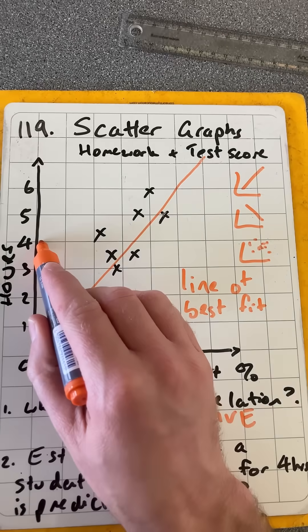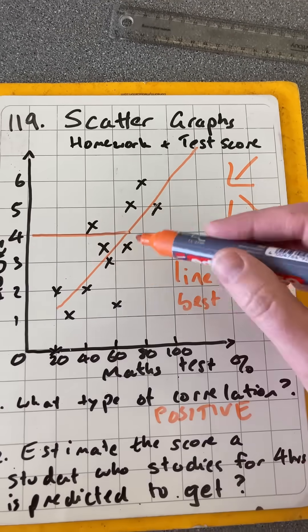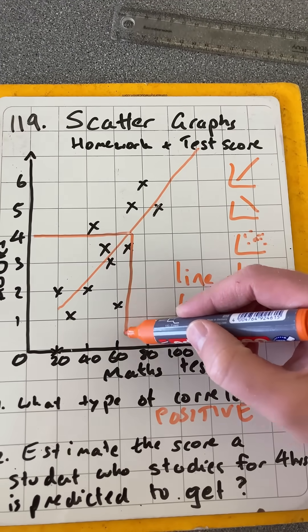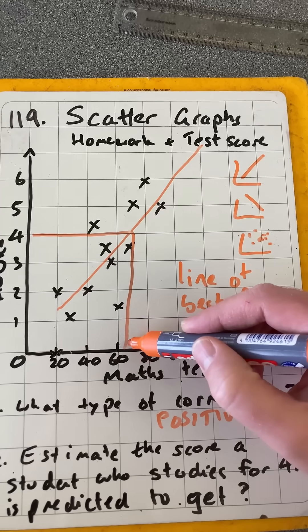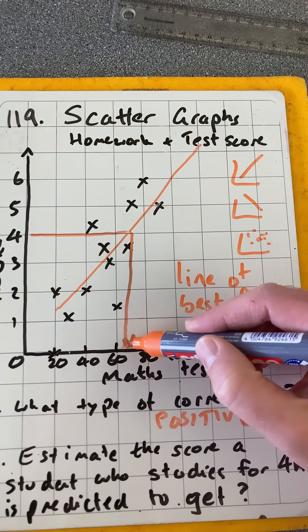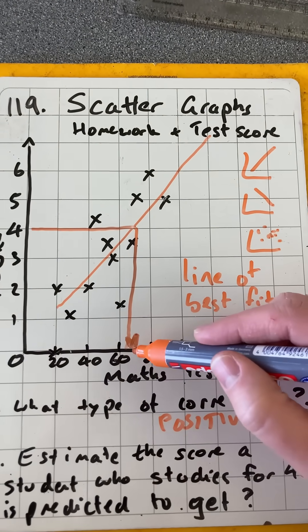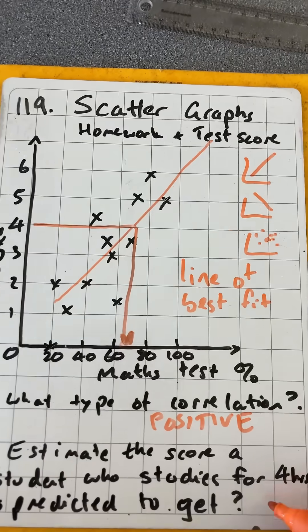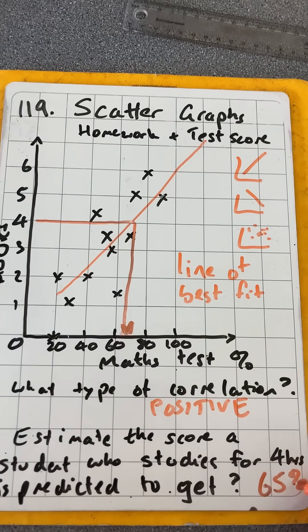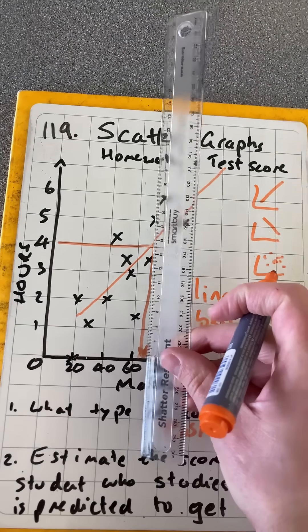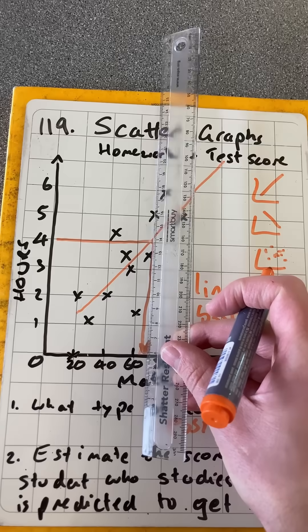Then we read across from four to our line of best fit and then down to roughly there if you're using a ruler. Let's say they'd get about 65% on their test. But use a ruler and have better grid marks and you'd get a clear idea.